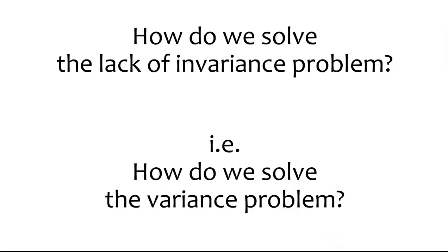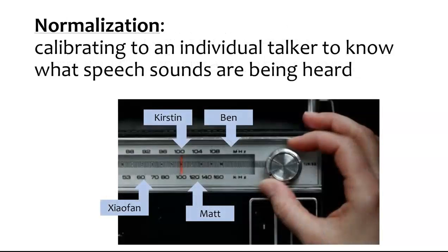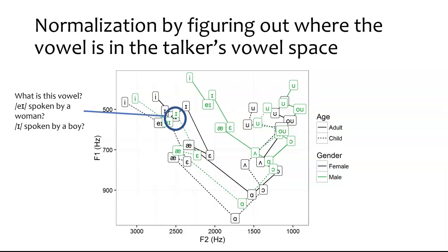How do we solve the lack of invariance problem? We know that we do solve it, because you can understand the speech being said here and on the previous slides. But we don't know how we solve it — we don't know how we cut through all that variance and still understand what we're hearing. The term for how we do this is normalization: calibrating to an individual talker to know what speech sounds are being heard. We have a vowel chart here with vowel spaces plotted for adult women, men, and children — girls and boys.